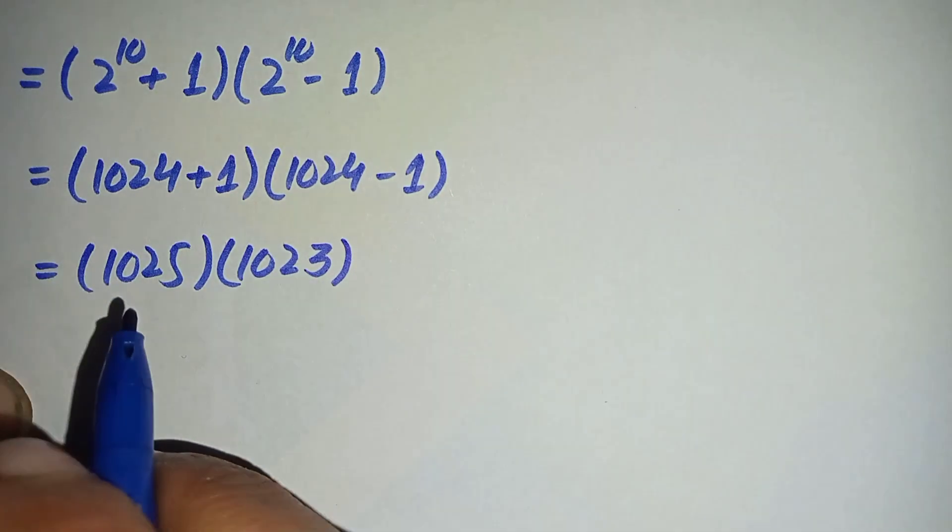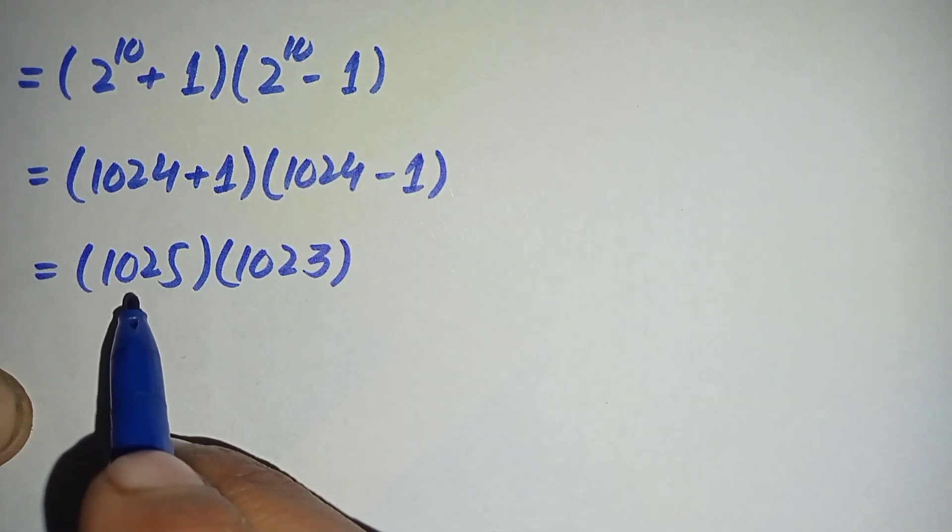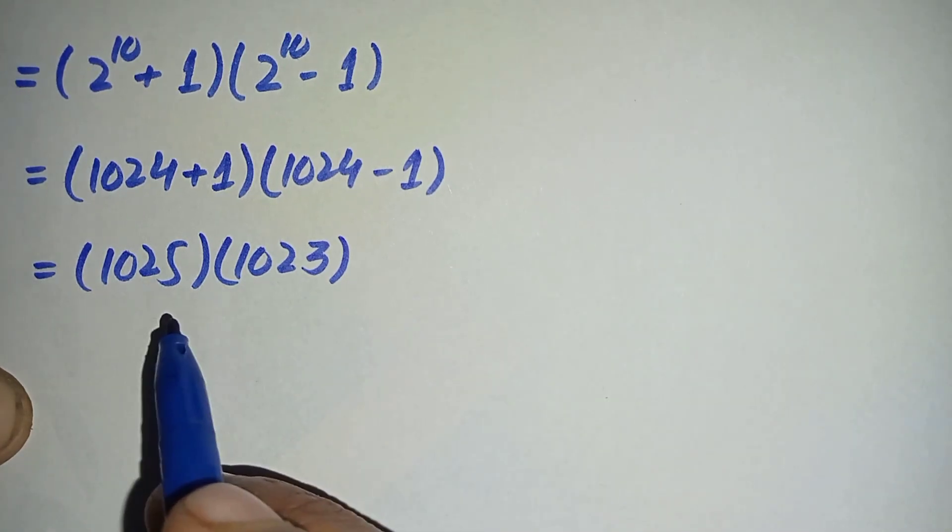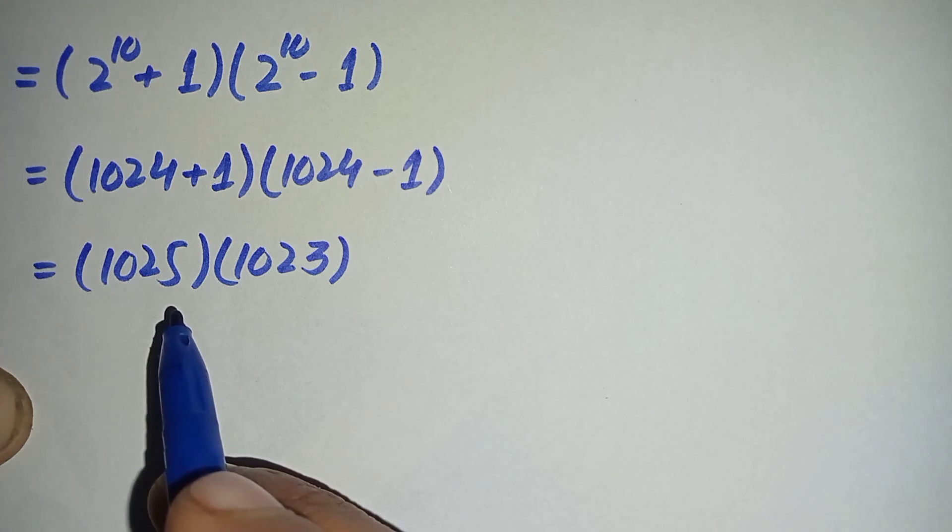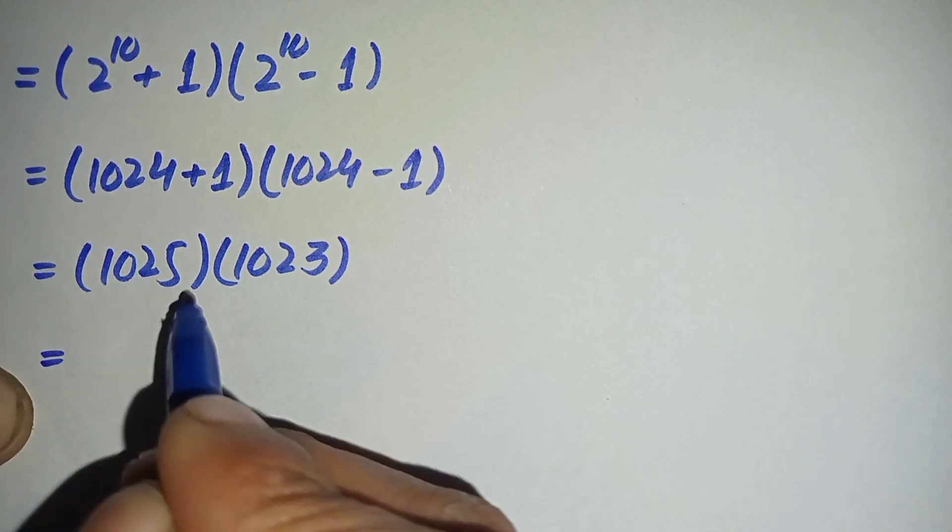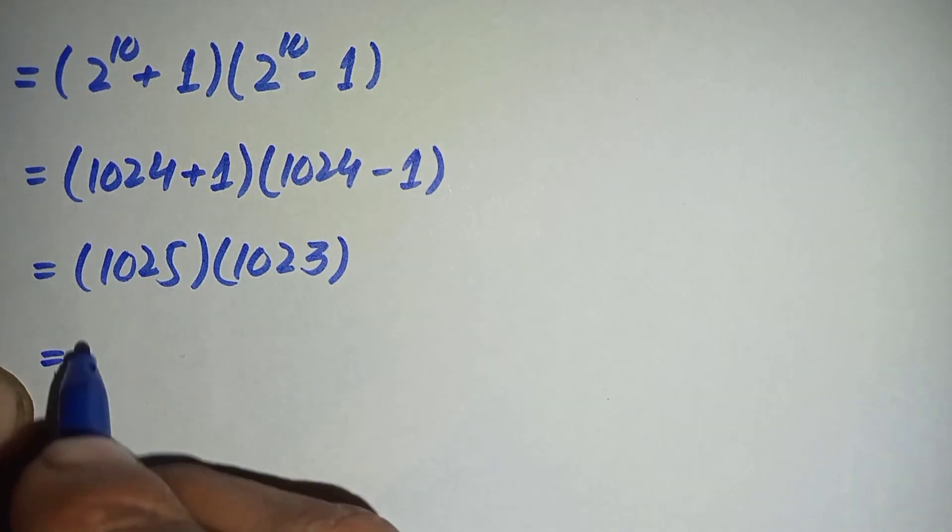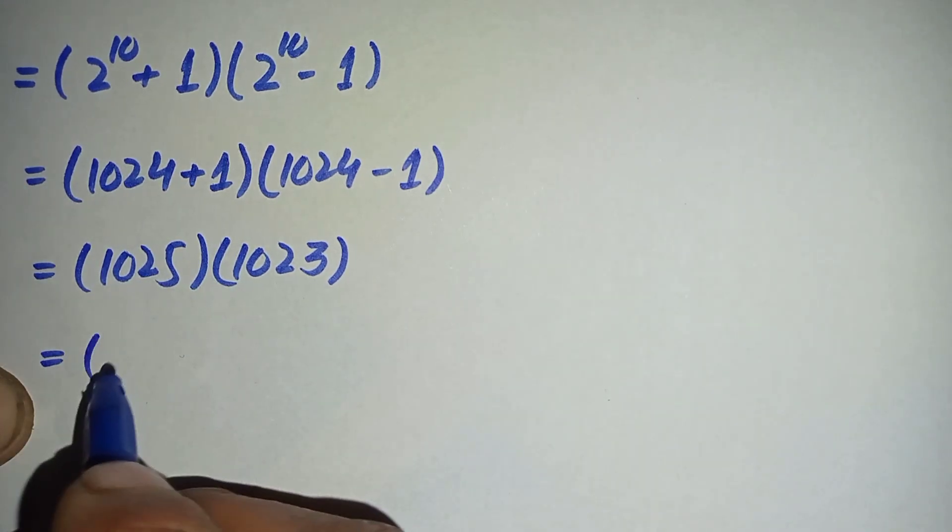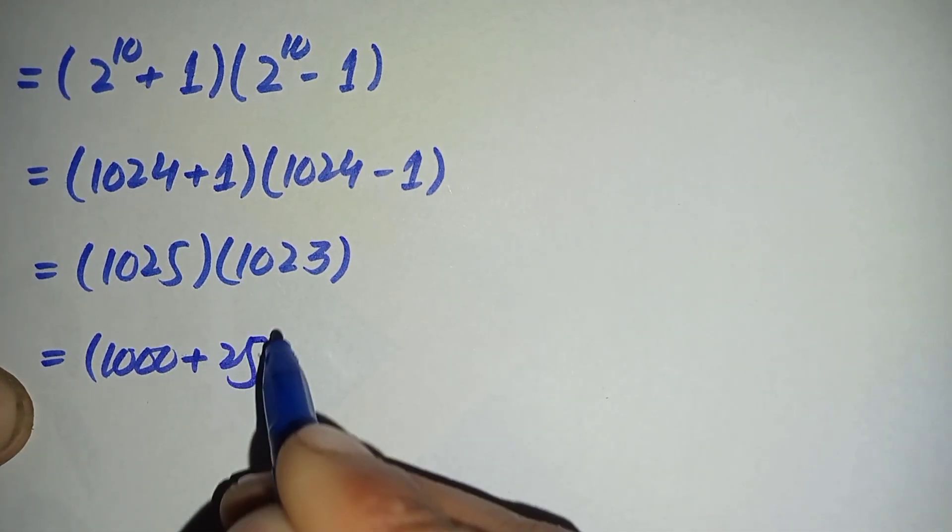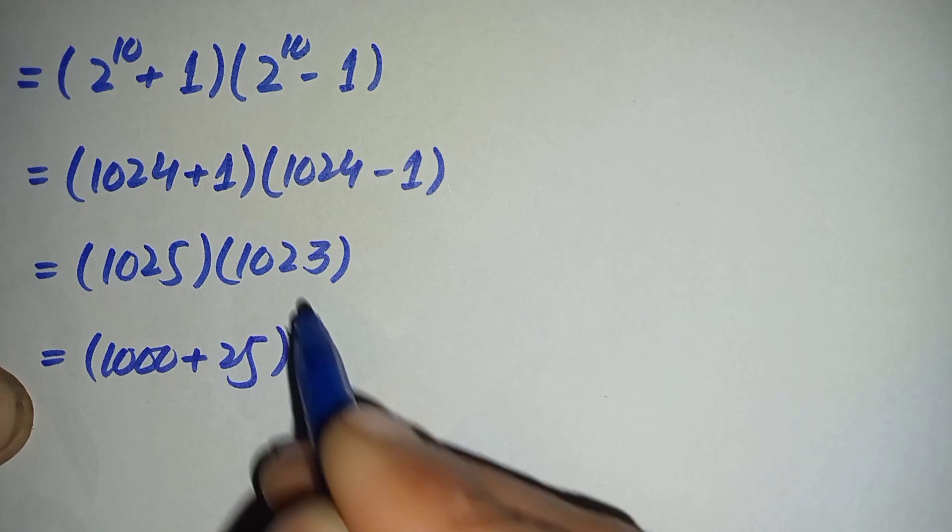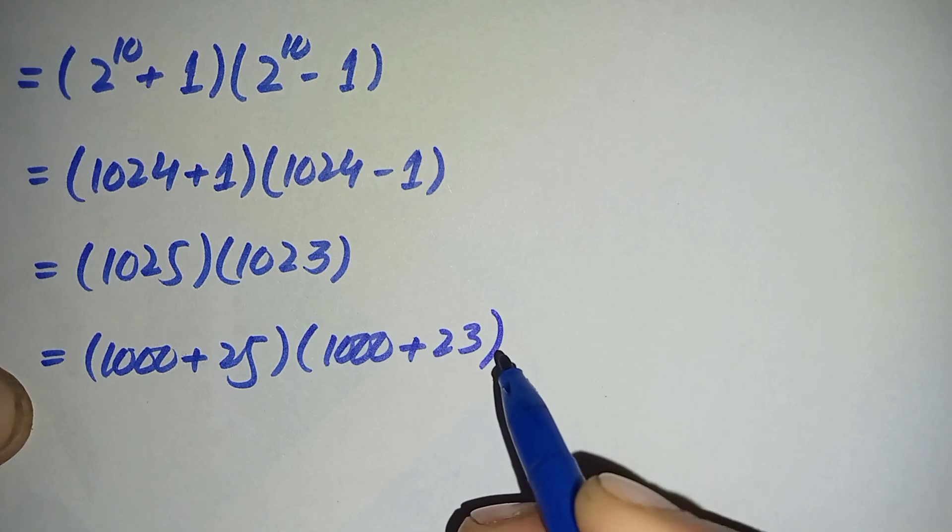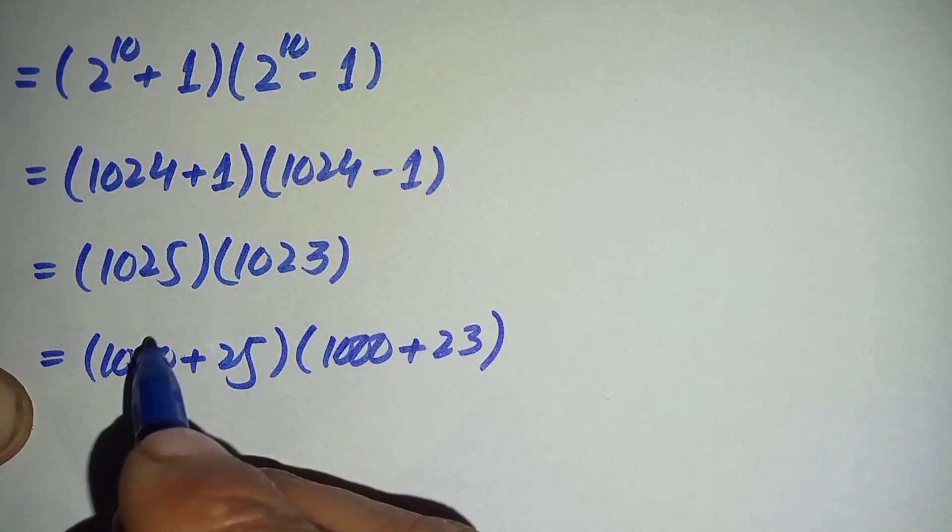Now here there are two approaches to solve this equation further. One is to directly multiply these two numbers by ordinary multiplication, and here I will use a shortcut and a simple way to solve this multiplication. So let us look and learn how to multiply them easily. We can write both these numbers as 1000 plus 25, times 1000 plus 23.